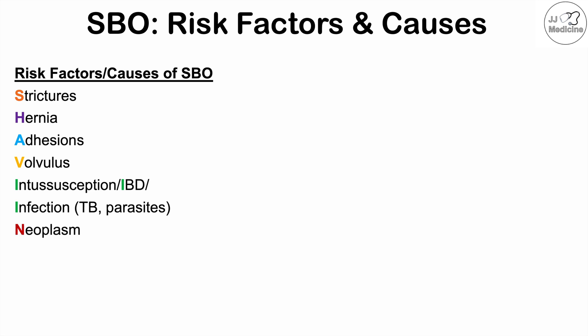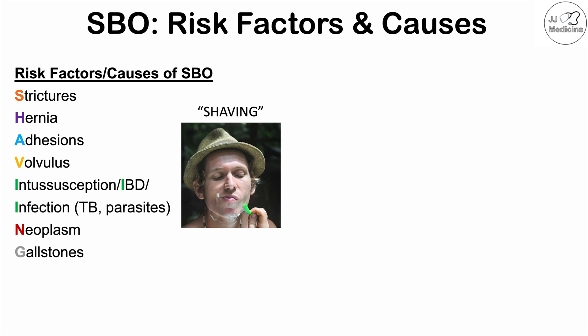Neoplasm — malignancy — and cancers within the abdominal cavity can cause a small bowel obstruction. If gallstones are large enough and there is a fistula between the gallbladder and the small bowel, large stones can pass into and block the small intestine. We can remember all these causes using the mnemonic SHAVING: Strictures, Hernia, Adhesions, Volvulus, Intussusception, IBD and Infection, Neoplasm, and Gallstones.